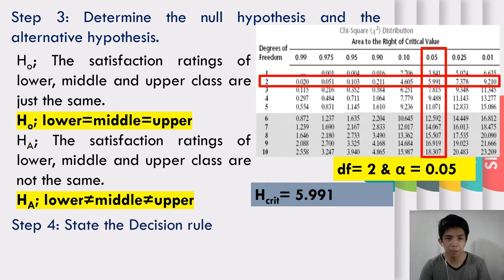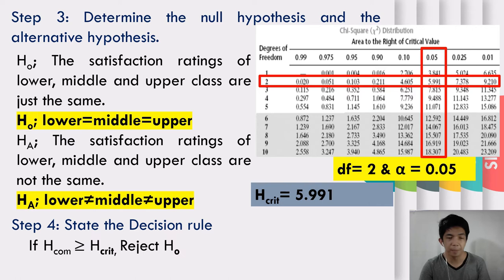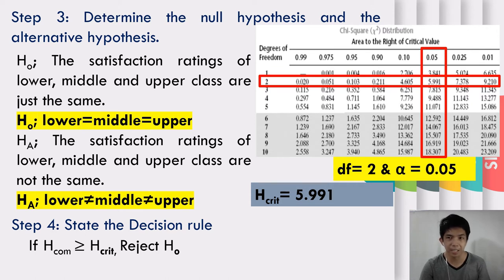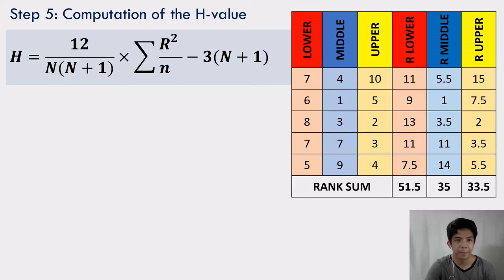Step 4: State the decision rule. If H computed is greater than or equal to the critical value, we are going to reject the null hypothesis.